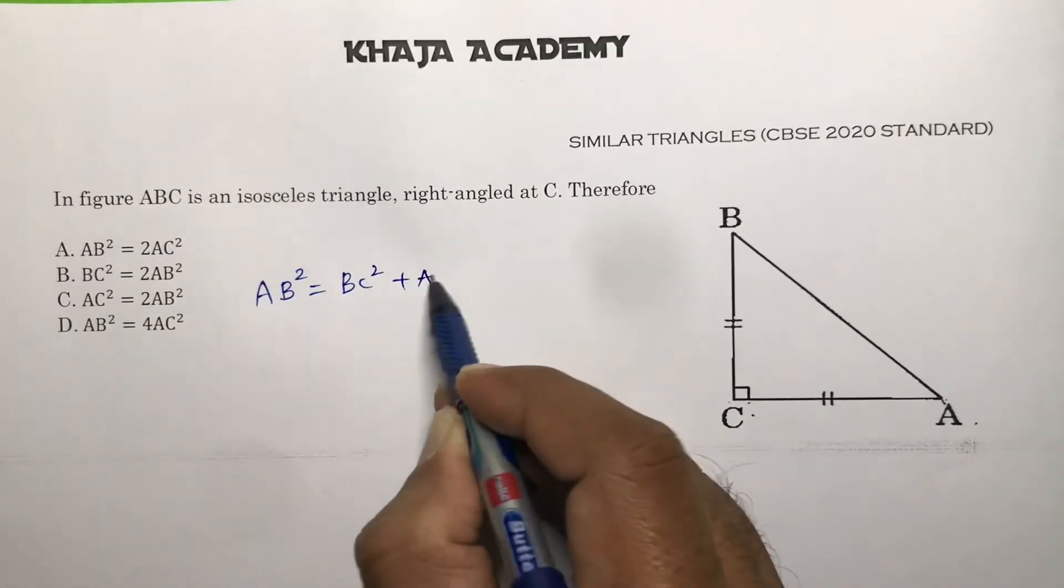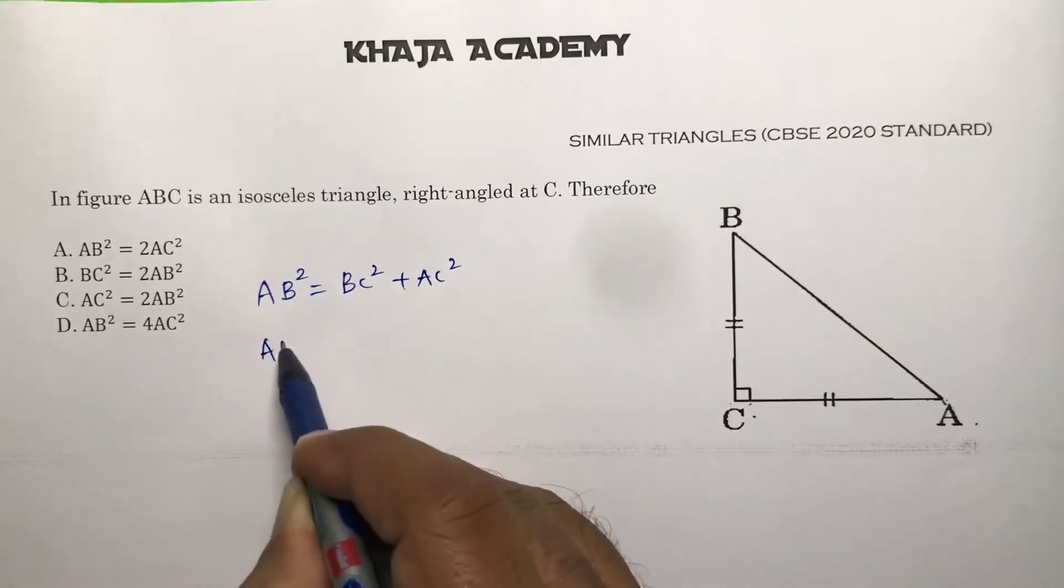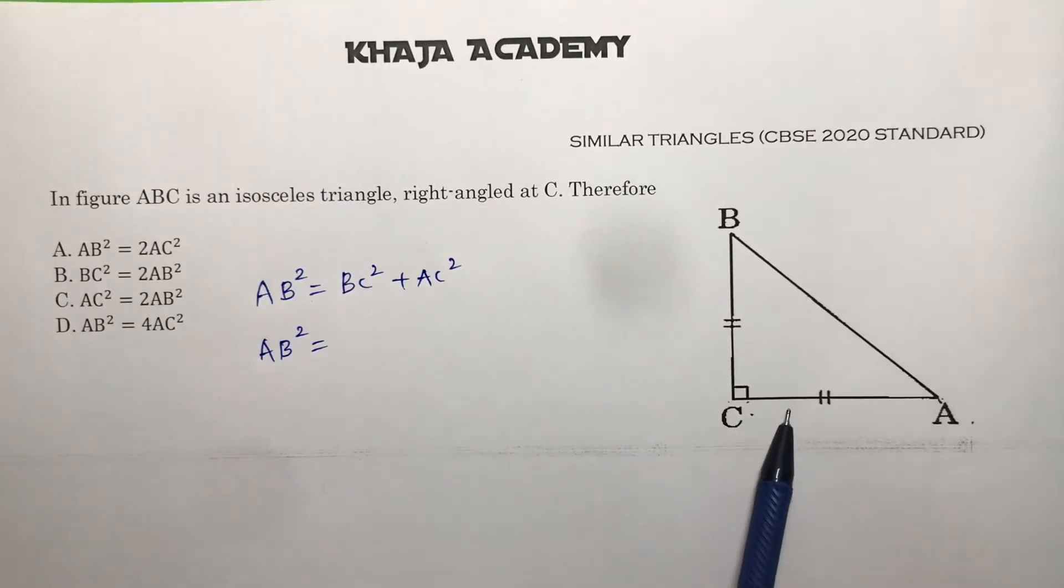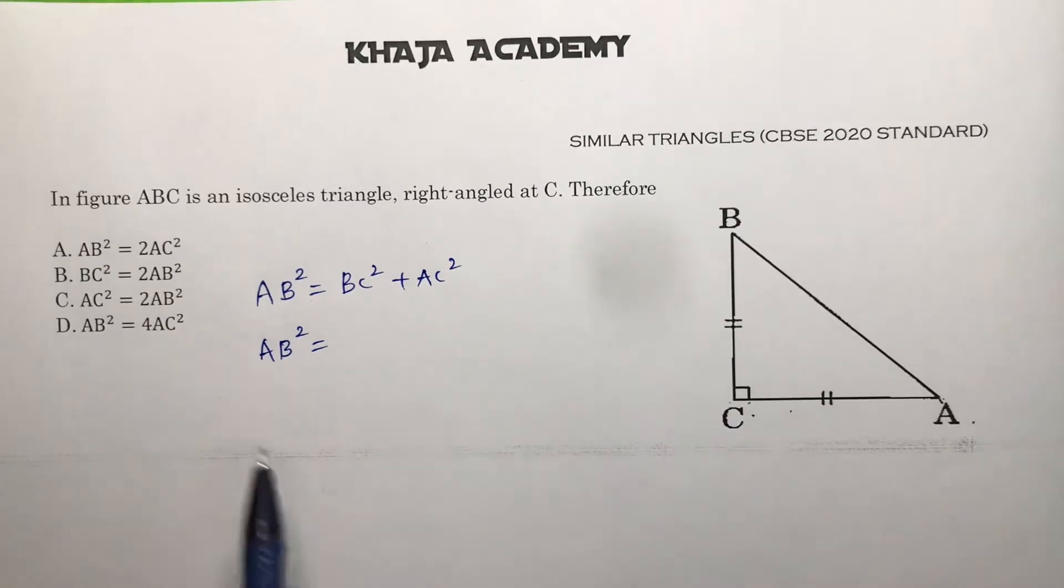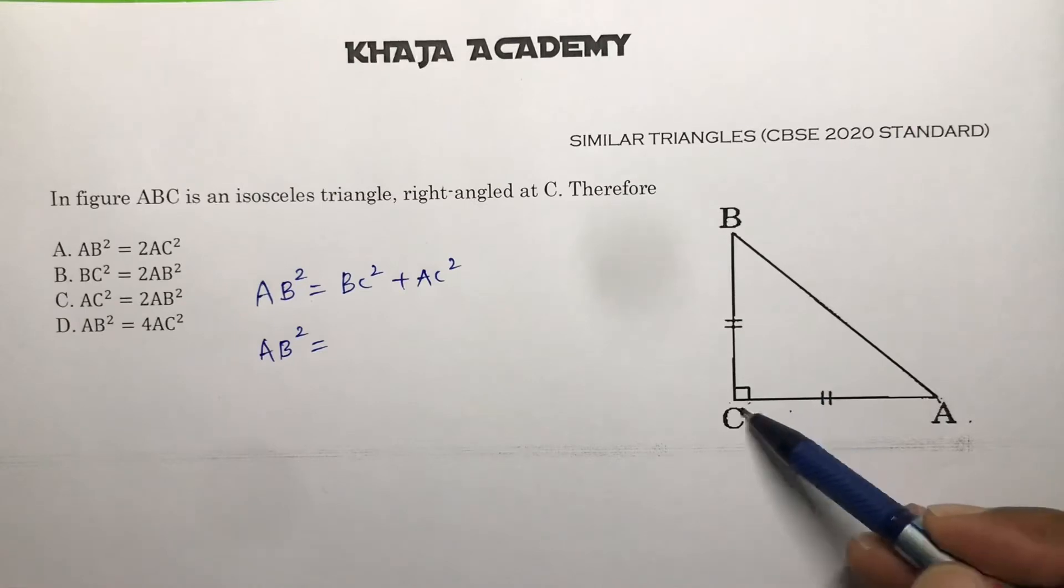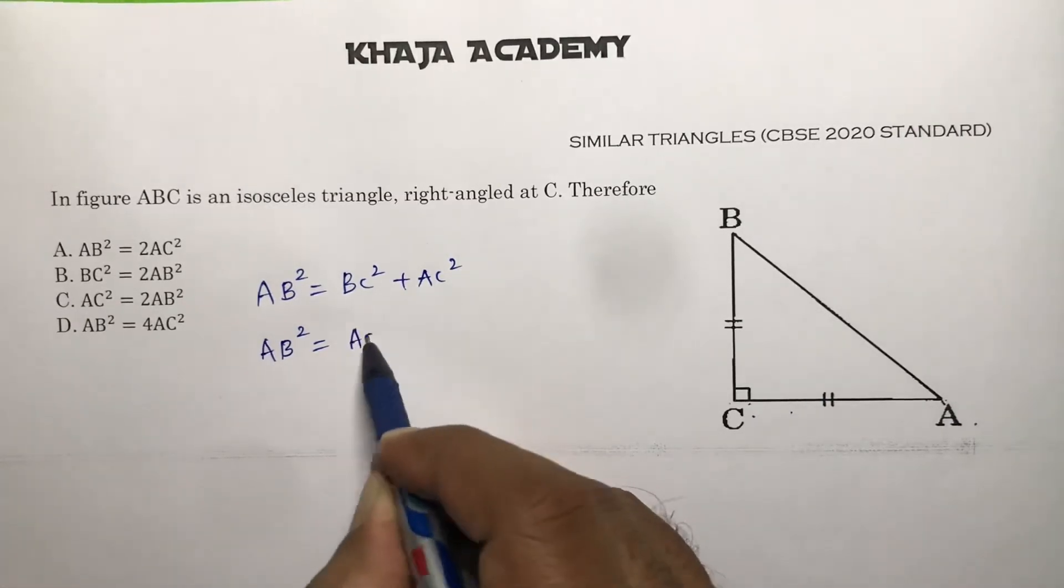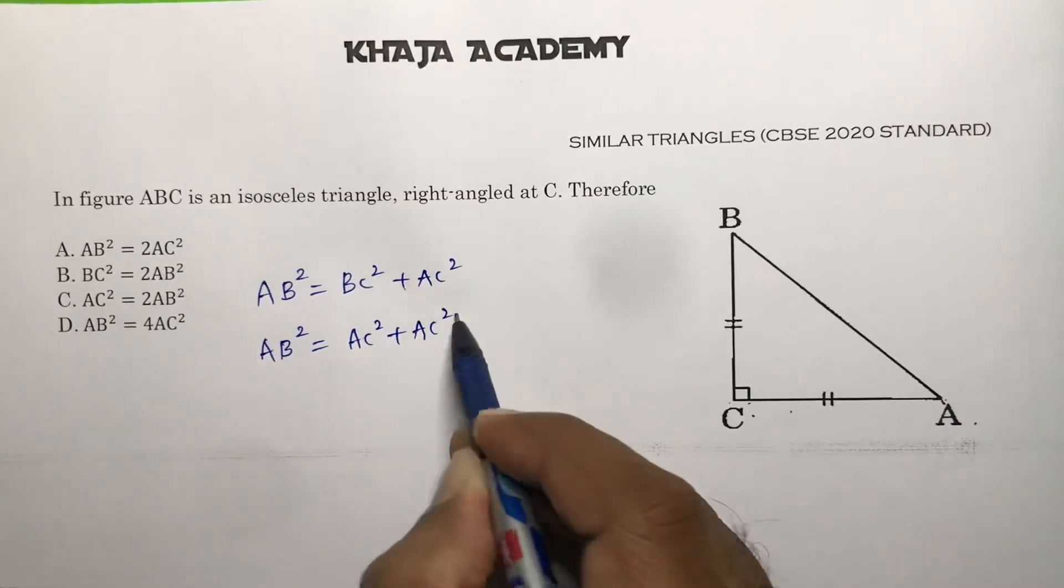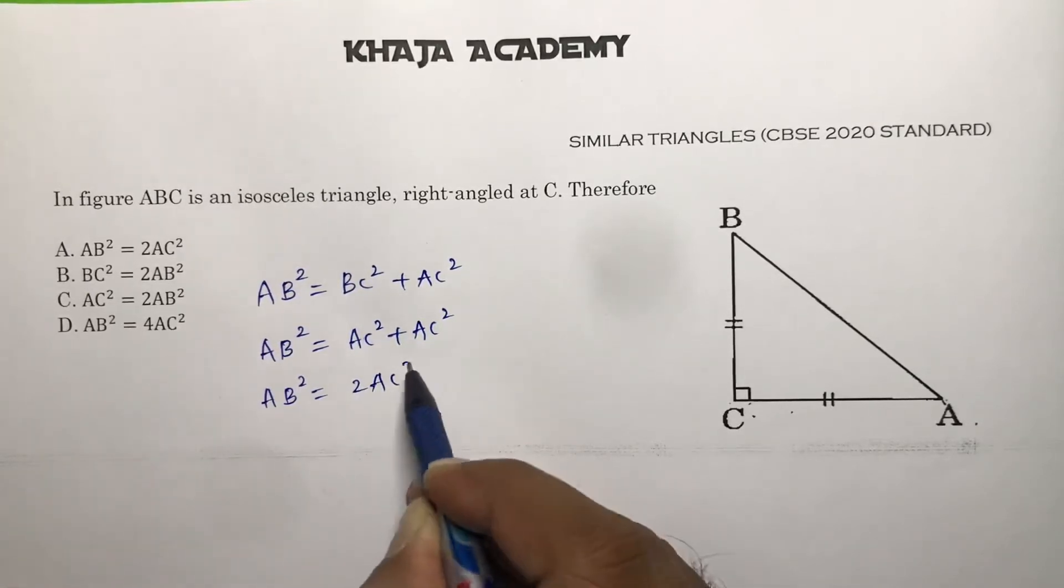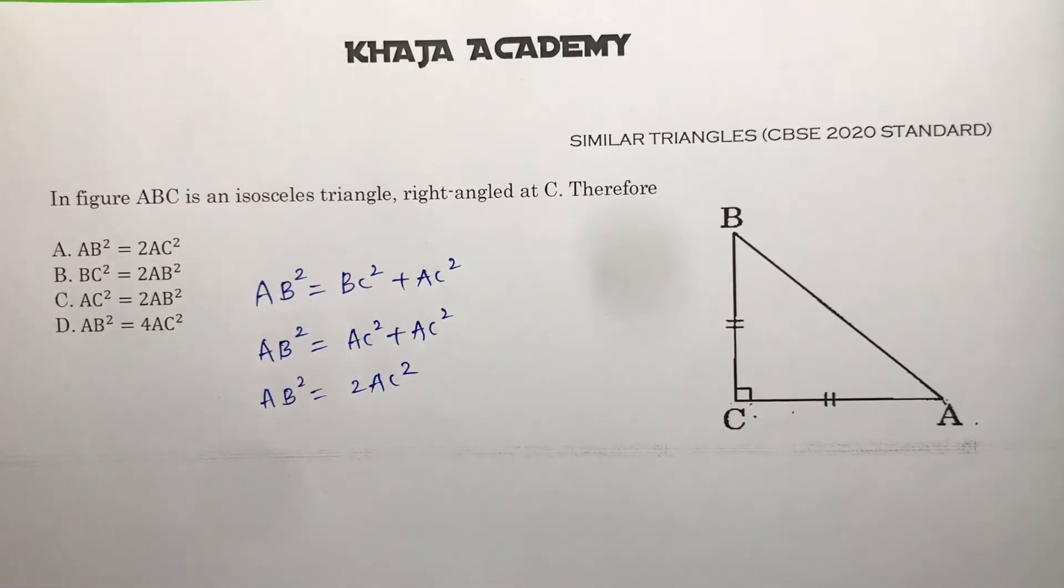So AB square equals—now you need to see the answer whether they gave in terms of AC or BC. See here we don't have BC, so in place of BC write it as AC. So AC square plus AC square. AB square is 2AC square. So AB square equals 2AC square, so the correct option is B.